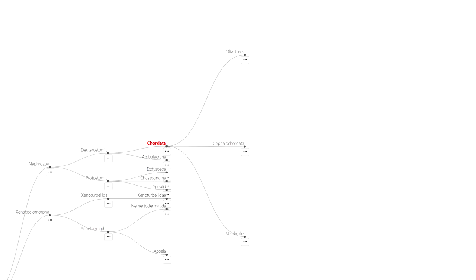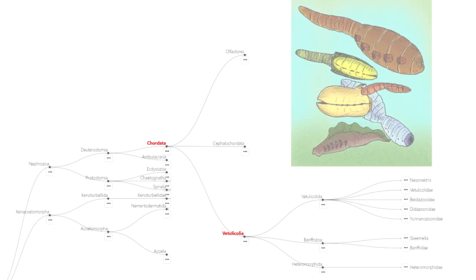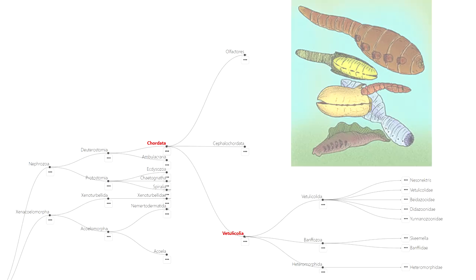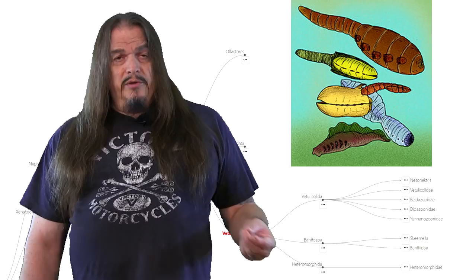So let's look at some of the subsets of chordates, being deuterostomes with a brain, heart, and notochord. The most primitive of them are the extinct vetulacollia. One of the laws of evolution is that the further back in time you look, the simpler and more similar organisms appear to be because they are more closely related.